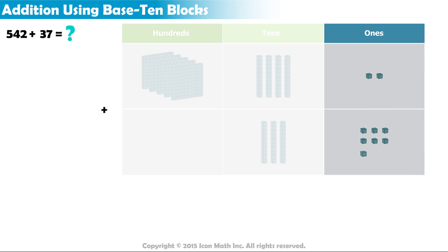Let's start with the ones place. If we join all the units together, then count the total, we get 9 units.